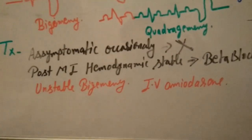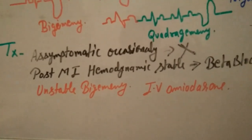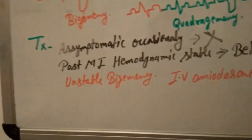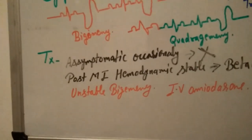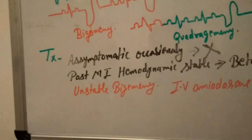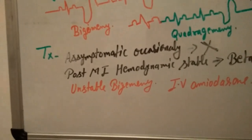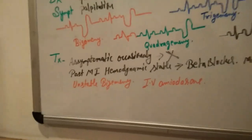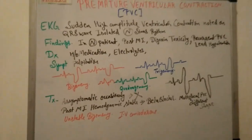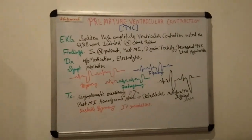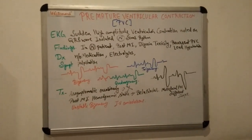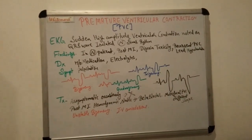If the patient is hemodynamically unstable with bigeminy, we need to give IV amiodarone. Amiodarone is indicated because there may be tachycardia with rising BP — amiodarone works by lowering the blood pressure and lowering the pulse rate.